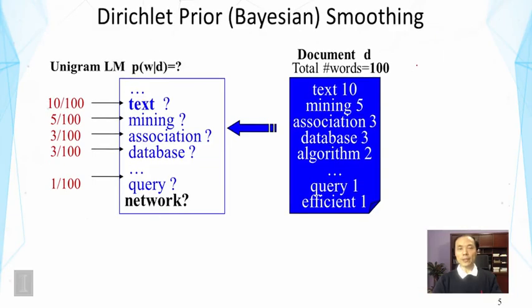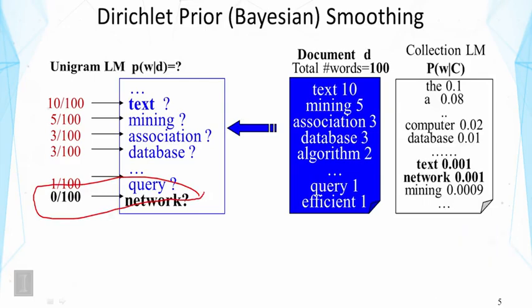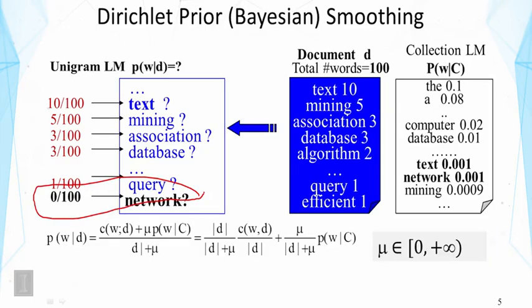The second one is similar, but it has a dynamic coefficient for linear interpolation. It's often called Dirichlet Prior or Bayesian smoothing. Again, here we face the problem of zero probability for an unseen word like network. Again, we will use the collection language model, but in this case, we're going to combine them in somewhat different ways. The formula first can be seen as an interpolation of the maximum likelihood estimate and the collection language model as before, as in the JM smoothing method.